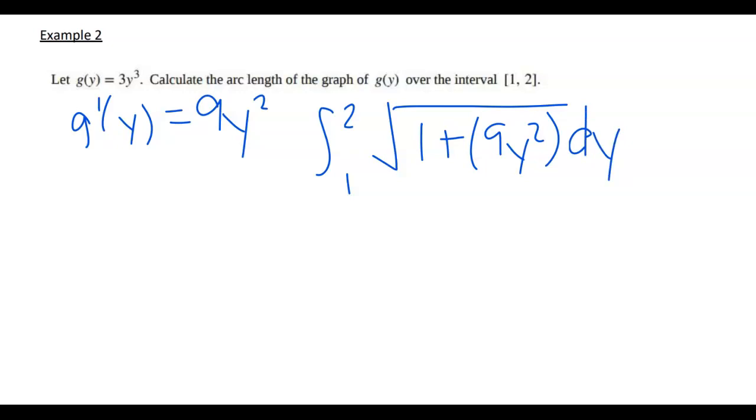So integral from 1 to 2 of 1 plus 9y squared squared: 81y to the fourth dy. Now that is not going to be something that we are able to take the integral of without doing something more advanced. We don't know that at this point.